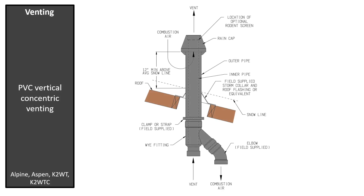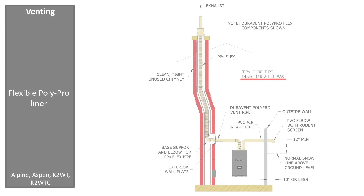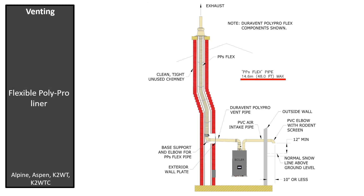PVC concentric vertical venting should be a minimum of 12 inches above average snow level. If using the existing chimney for venting, apply either a polypropylene or stainless steel flexible liner and use the sidewall for air intake. To determine the equivalent pipe length of a flexible liner, multiply the length of the liner by 1.2. Unlike using existing B vent, combustion air cannot be drawn from masonry chimneys. Refer to the I&O manual for manufacturer part numbers.